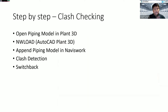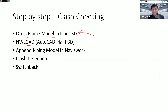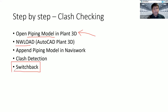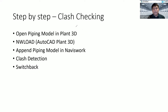The workflow steps are straightforward. First, use Plant 3D to create your 3D piping. From Plant 3D, use the command NW Load. Once your drawing is saved and Navisworks has successfully loaded, you can append your piping model in Navisworks, start the clash detection, insert rules, and the most important thing is the switchback — from the clash report you can go back to the 3D model and do the editing.